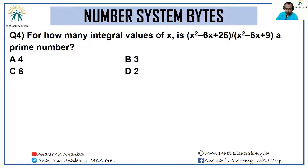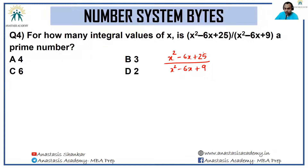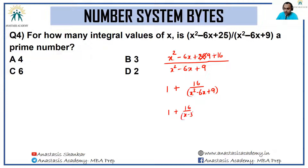Next question: for how many integral values of x is (x² − 6x + 25) / (x² − 6x + 9) a prime number? Let's write the numerator as (x² − 6x + 9) + 16, which gives 1 + 16/(x² − 6x + 9). The denominator (x² − 6x + 9) is simply (x − 3)². So the expression becomes 1 + 16/(x − 3)².